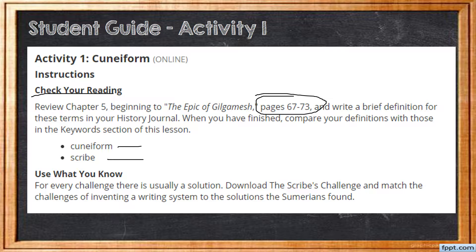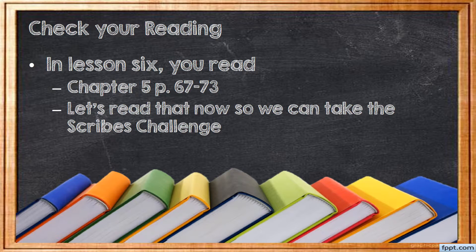Then you will use what you know — for every challenge, there is usually a solution. Download the Scribes Challenge and match the challenges of inventing a writing system to the solutions that the Sumerians found. Go ahead and open that up and see how much you can fill out; we'll be doing this together in class as well. If you have not already read Chapter 5, pages 67 through 73, go ahead and pause the recording and read that now so you'll be able to get started on the Scribes Challenge.